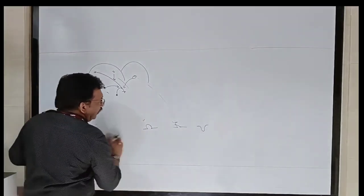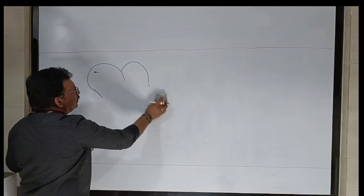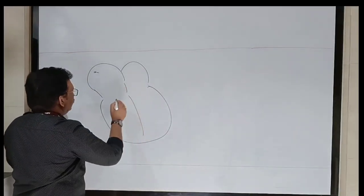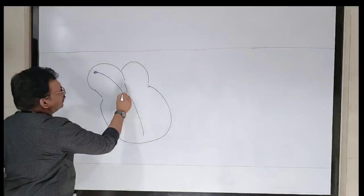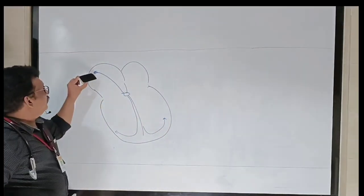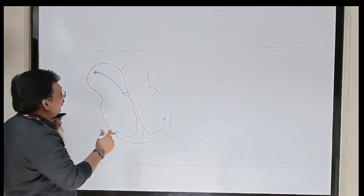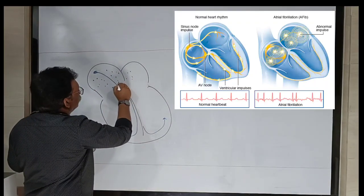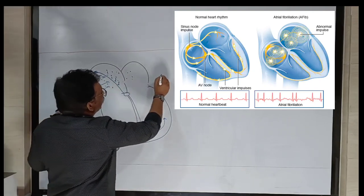Now another important problem in atrial abnormality. From the SA node there is electricity going to the AV node, from there conduction occurs to the ventricle — one electricity propagating throughout the heart. But in atrial fibrillation there are multiple foci in the atrium all trying to send electrical stimulus to the conduction system. The atrium ends up beating at a rate of around 600 beats per minute.